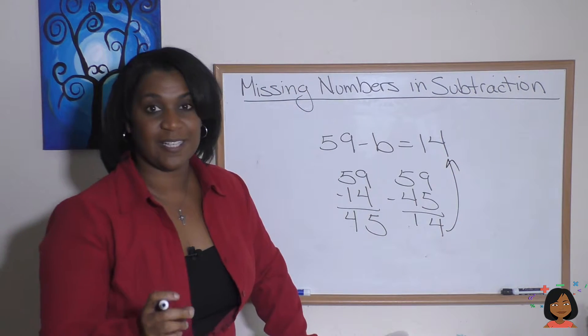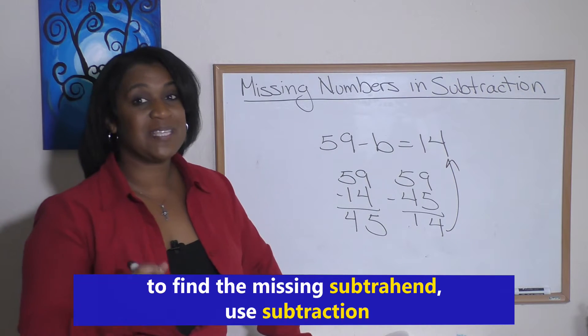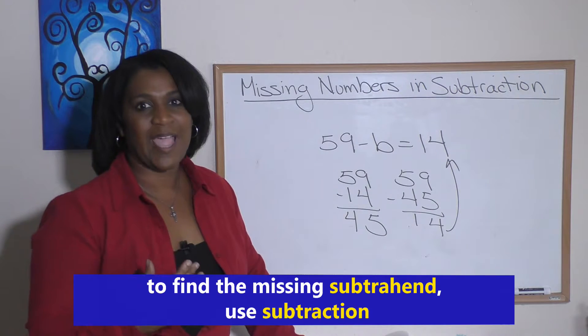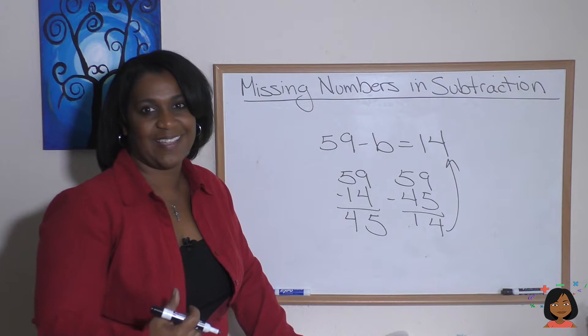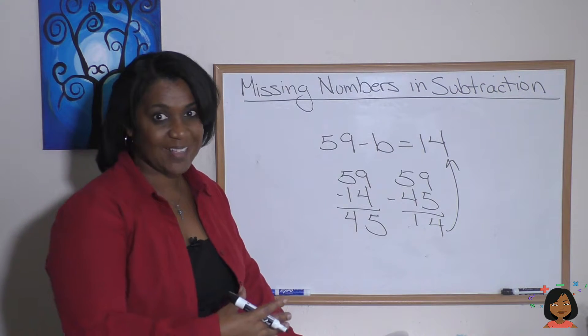59 minus 45. Nine minus five is four, five minus four is one. And look, that works perfectly! So the rule is, if we are solving for a missing subtrahend—that second number—we actually subtract. We do more of the same. I'll say it again: if we're looking for a missing subtrahend, we subtract to find the answer.